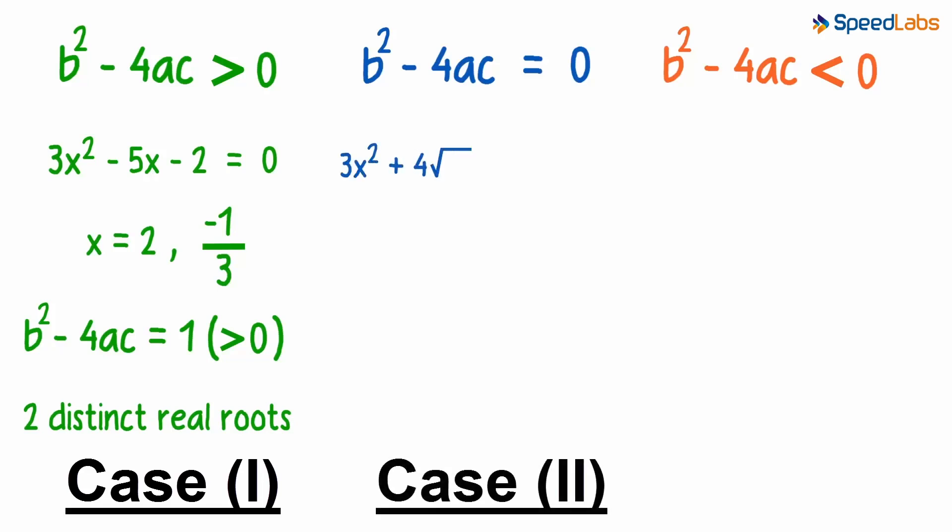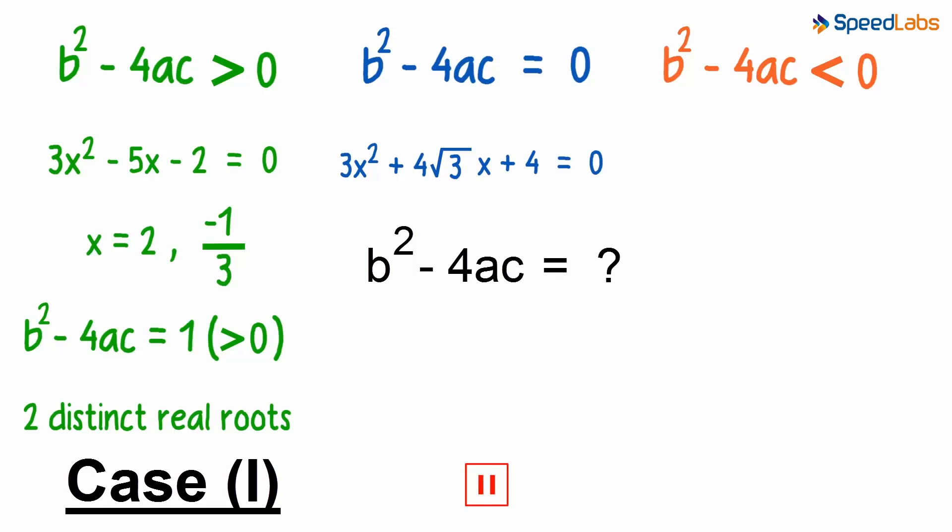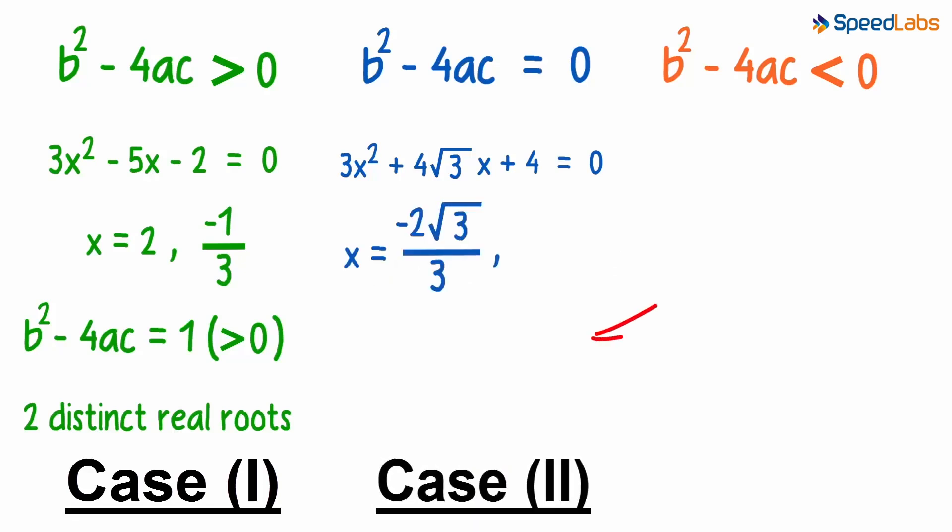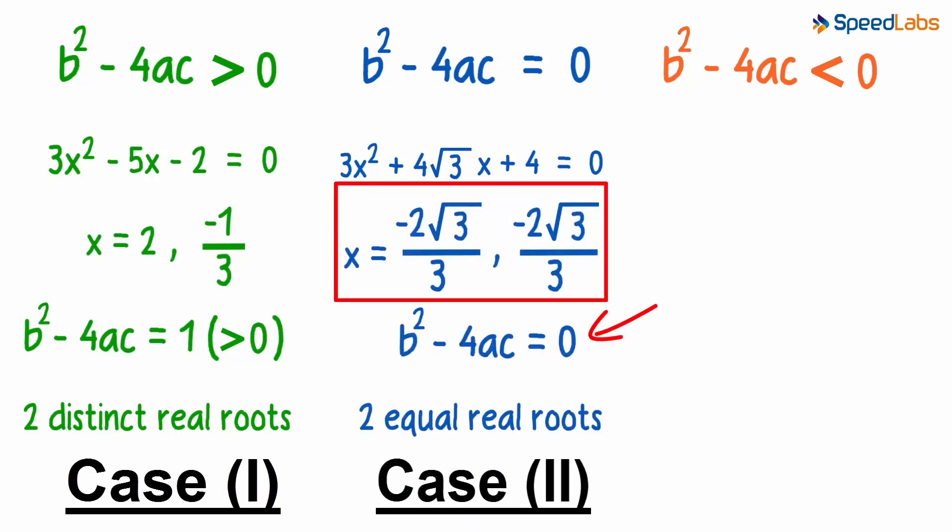Now take this equation and find the value of b squared minus 4ac. You should get it as zero. And these were the roots we got after we solved it.